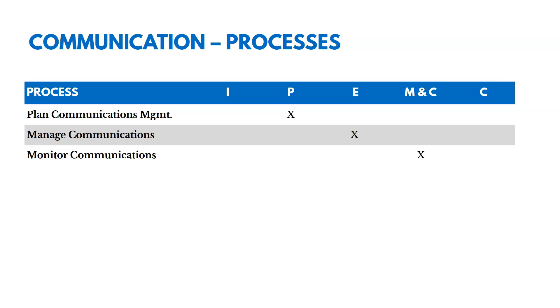There are three processes in this chapter: one's in planning, one's in executing, and one's in monitoring and controlling.